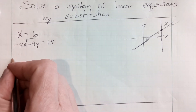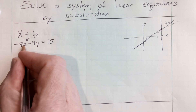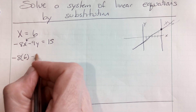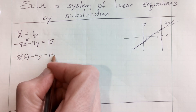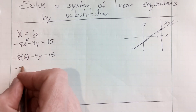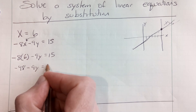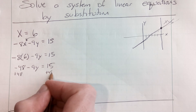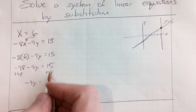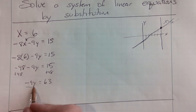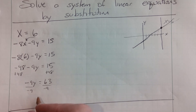I'm going to rewrite that second equation as negative 8. Now, instead of an x, I'm substituting in what the other equation told me x was, which was 6. Minus 9y equals 15. Now I just solve for my y value. Negative 8 times 6 is negative 48, minus 9y equals 15. I'm going to add 48 to both sides. I get negative 9y equals 63. Then I divide by negative 9, and I get a y value of negative 7.